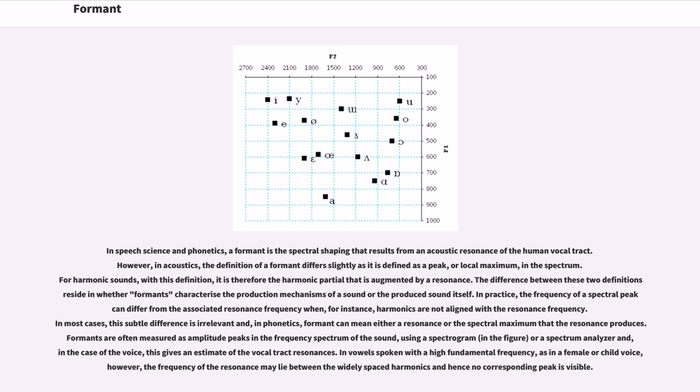Formants are often measured as amplitude peaks in the frequency spectrum of the sound, using a spectrogram, in the figure, or a spectrum analyzer and, in the case of the voice, this gives an estimate of the vocal tract resonances.